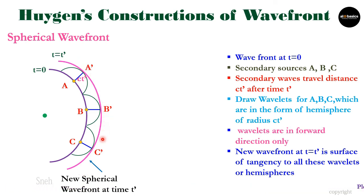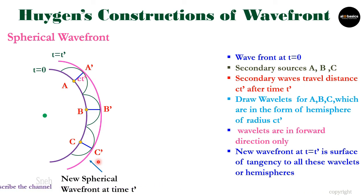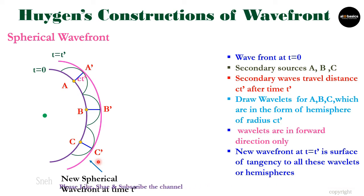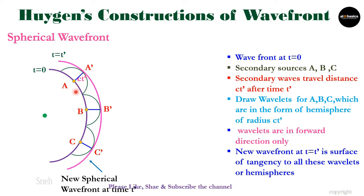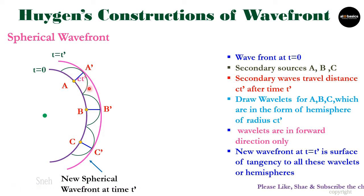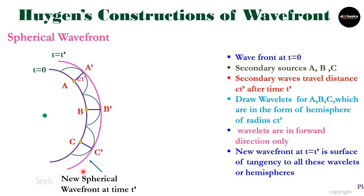The thick pink line shows the new wavefront, which is spherical in shape — the new spherical wavefront after time t′. To summarize Huygens' construction: all points on the wavefront are secondary sources; secondary waves travel distance ct′ and we draw hemispheres (wavelets) in the forward direction only; the envelope of these wavelets is the new wavefront. In this way we can construct the new wavefront.